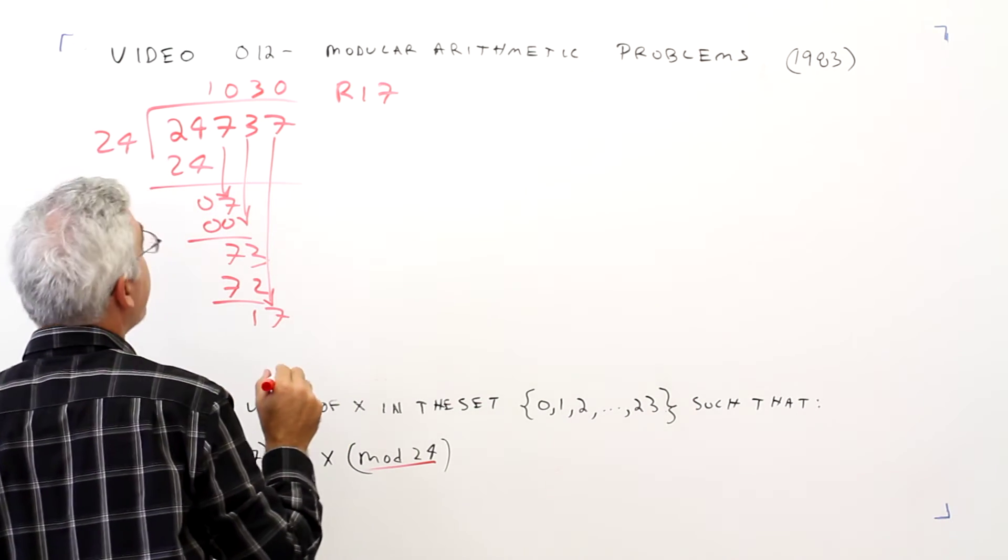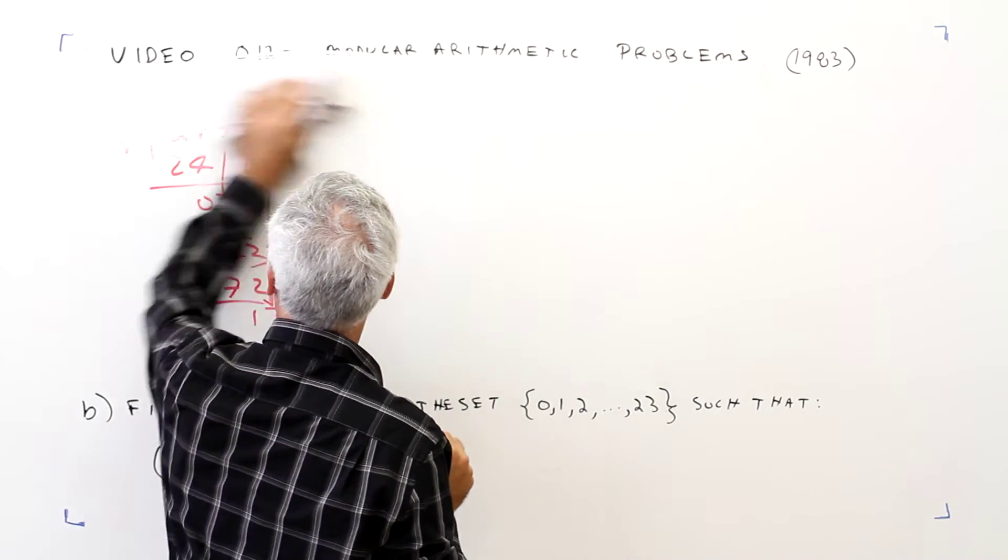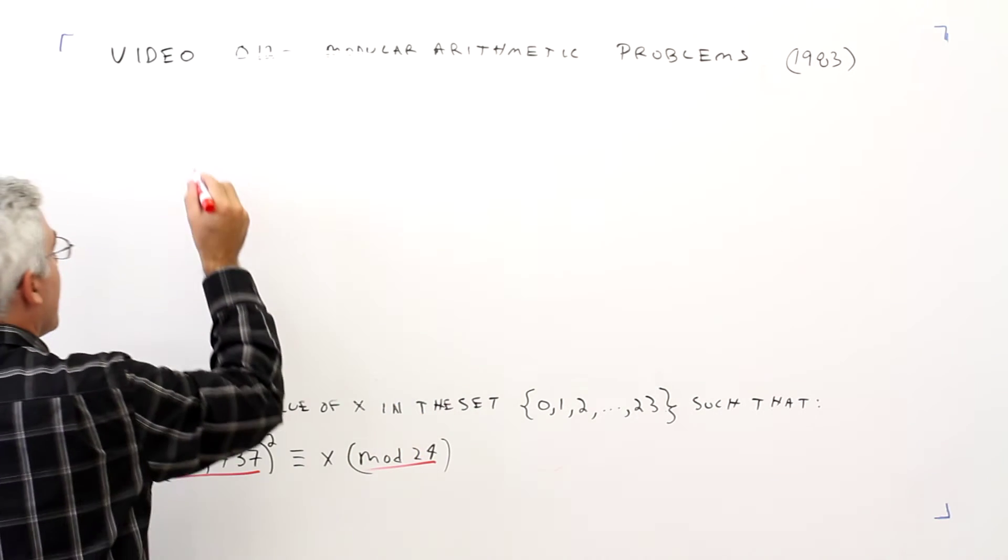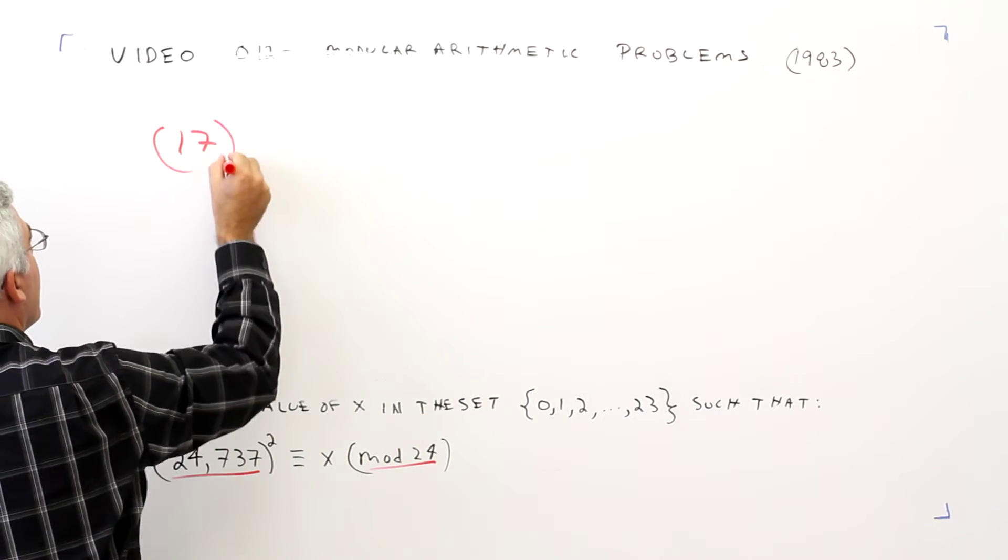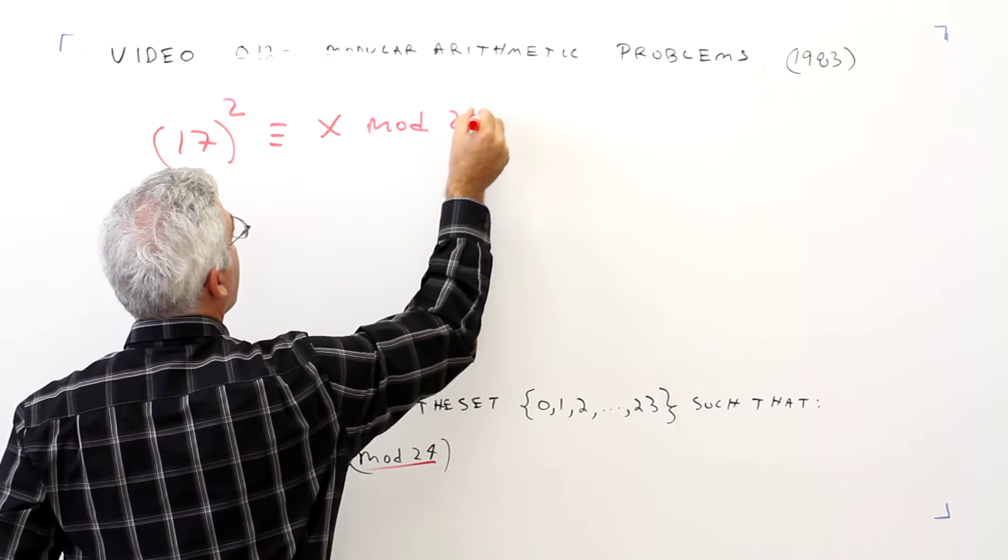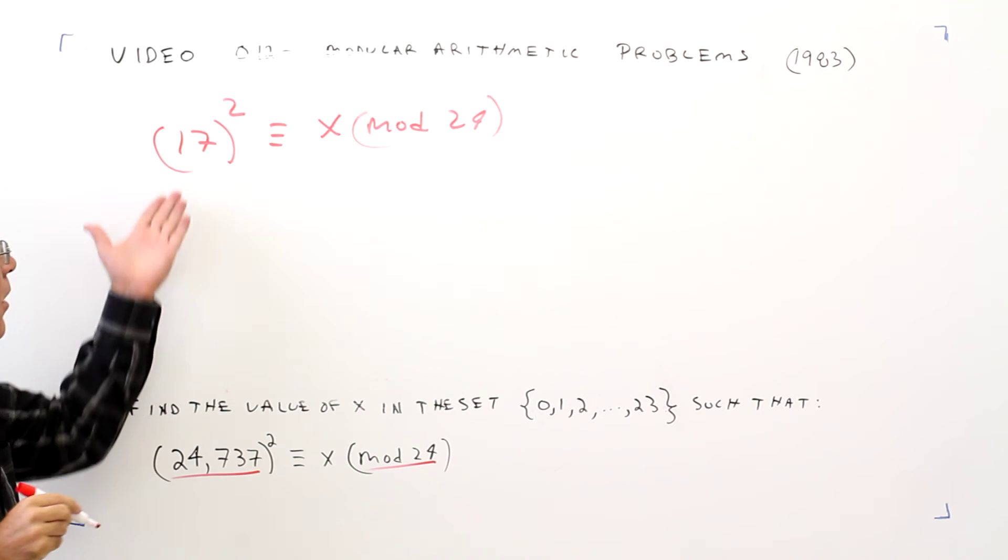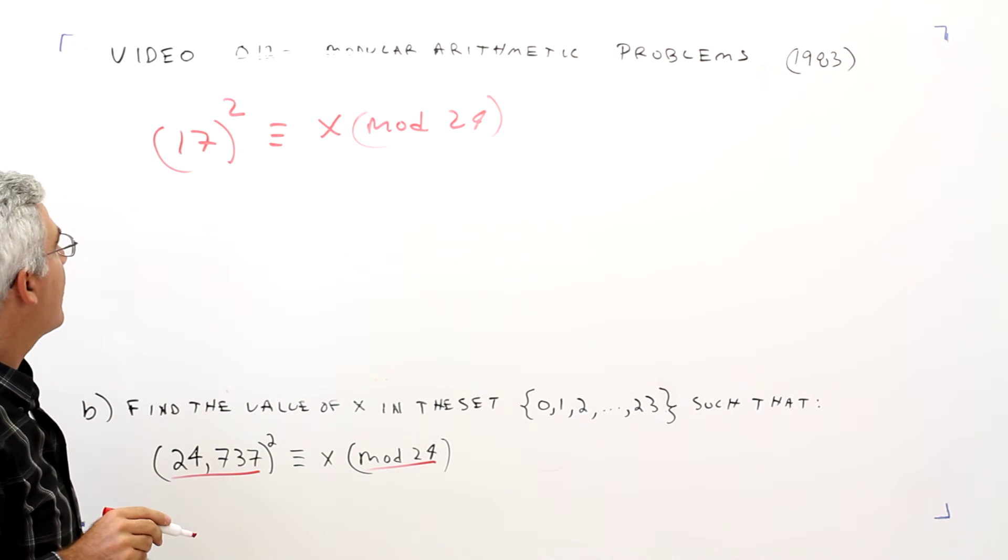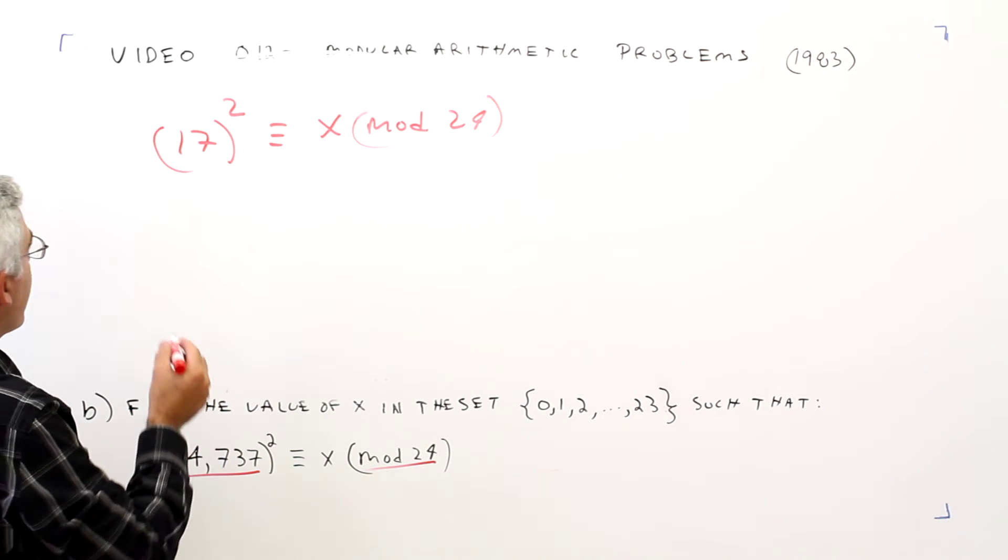So now I've got 17 squared is congruent to x mod 24. Okay, 17 squared, I believe, was 289.